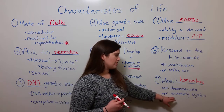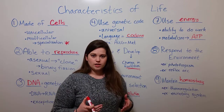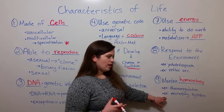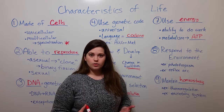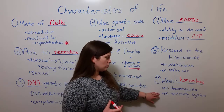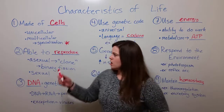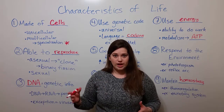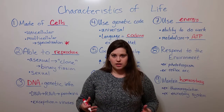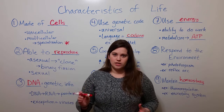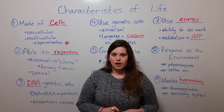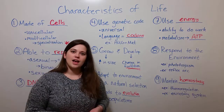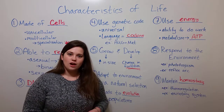Another example is the excretory system, which helps expel wastes from animal bodies. Without being able to expel wastes, they would build up in the body, which would be very unhealthy. Unicellular organisms also have ways to get rid of wastes, such as exocytosis or channel proteins that allow unneeded materials to be expelled from the cell. So there you have it — the various characteristics of living things. I hope you learned a lot, and thanks for watching Biology Professor.